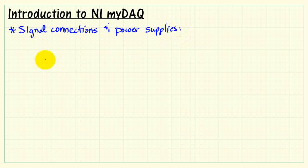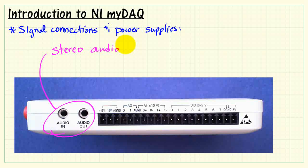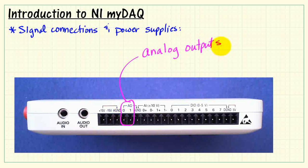Now, if you turn MIDAC on its side, we have various signal connections and the power supplies. We have audio input and output, and these are stereo connectors. You can apply standard line level audio to the audio input, and generate standard line level out. We have two channels of analog outputs. These have a range of plus-minus 10 volts for the output, and they have a maximum of 2 milliamp current drive.